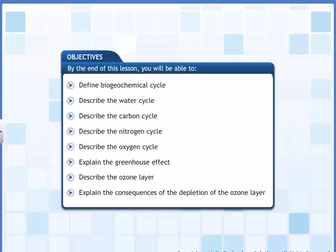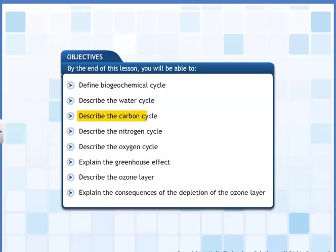In this lesson, you will learn about biogeochemical cycles, the greenhouse effect and the ozone layer. By the end of this lesson, you will be able to define biogeochemical cycle, describe the water cycle, and describe the carbon cycle.